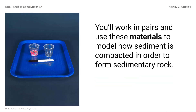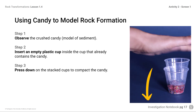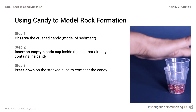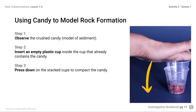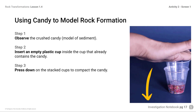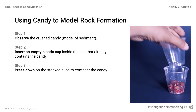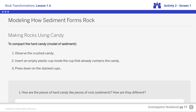You'll work in pairs and use these materials to model how sediment is compacted in order to form sedimentary rock. Step 1: Observe the crushed candy, or model of sediment. Step 2: Insert an empty plastic cup inside the cup that already contains the candy. Step 3: Press down on the stacked cups to compact the candy. Students, model the process of forming sedimentary rock and answer the questions on your screen.